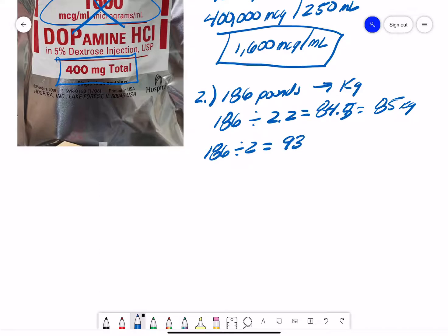And then subtract 10%. So take 93 subtracted by 9.3, which equals 83.7. If we round that up to 84 kilograms, we are 1 kilogram off from the textbook way of dividing by 2.2, which gets us pretty close.